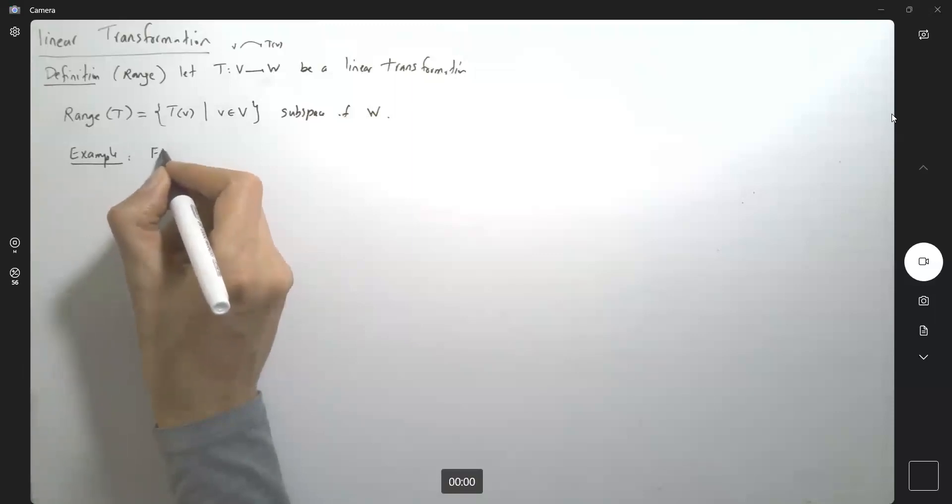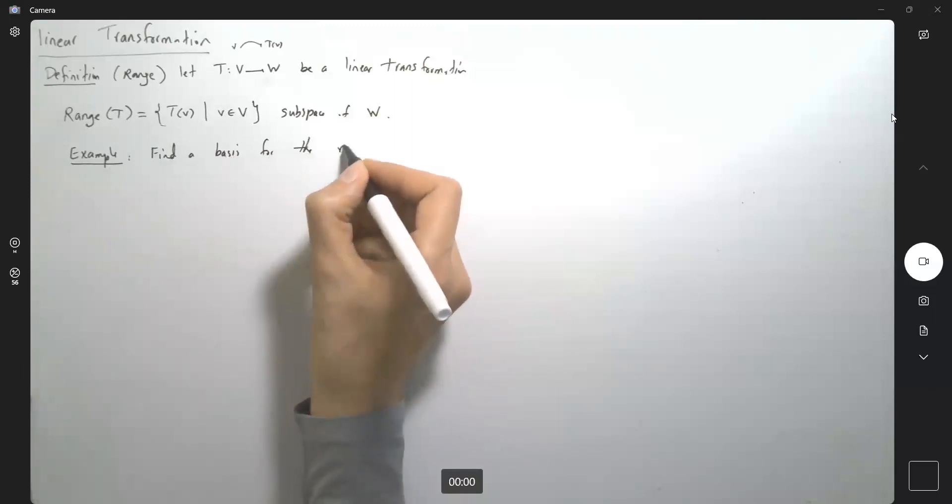So T v is such that V belongs to V, which is a subspace of W. Let's take a look at this example. Here I ask you to find a basis for the range of T.